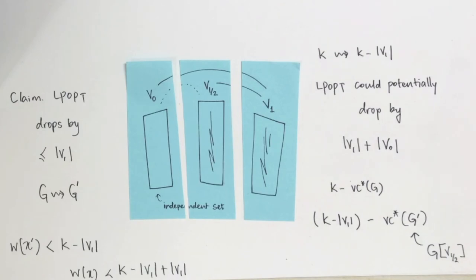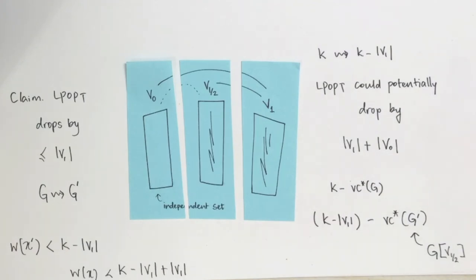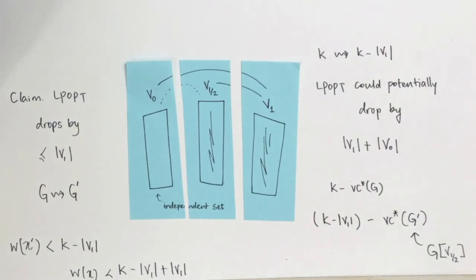We apply this reduction rule for as long as we can — at most n times, trying to force each vertex to 1. Only when this fails for every vertex can we conclude that all-halves is the unique optimal solution. At that point our branching will actually shrink the parameter. The argument for the right branch (deleting the closed neighborhood of v) is very similar, and I encourage you to work out why the measure strictly shrinks there as well.